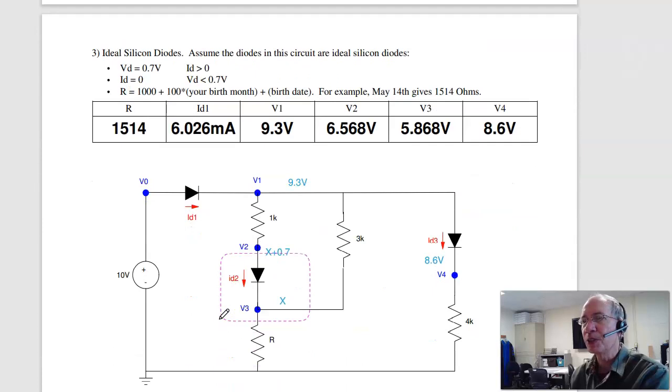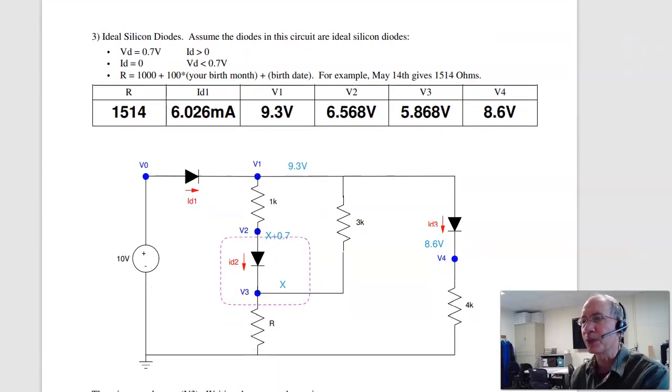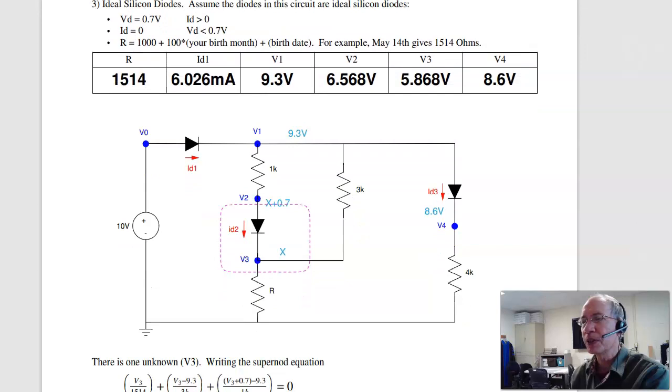Problem three, assuming an ideal diode, now solve for the voltages and currents. So here the trick is to figure out which diodes are on or off. Diode one is probably on. I've got 10 volts across it. So this makes this 0.7 when it's turned on, making V1 9.3 volts. I've got 9.3 volts across this diode. It probably turns on. So I lose another 0.7, making this 8.6 volts.